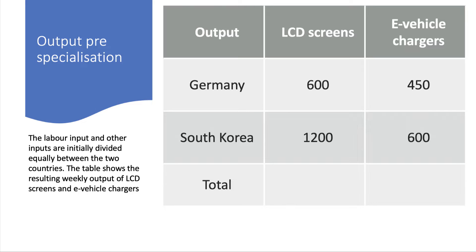Here's our matrix table. For the exam, it's important to just have one example that you know works, so you don't have to go through the whole rigmarole of working it out in the exam itself — you simply don't have time. Germany can produce 600 LCD screens per week and 450 vehicle chargers. South Korea can produce 1,200 LCD screens and 600 chargers. So South Korea has the absolute advantage — they can produce more of both — but we need to work out the comparative advantage. The total output initially of LCD screens is 1,800 per week, and the total output of chargers is 1,050.